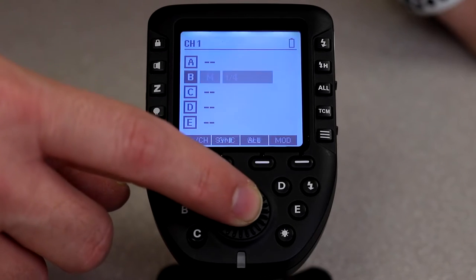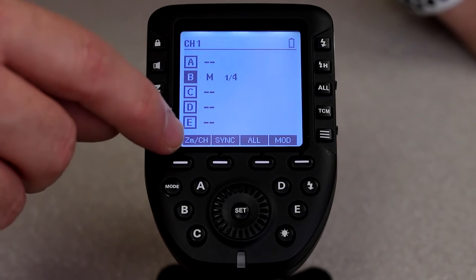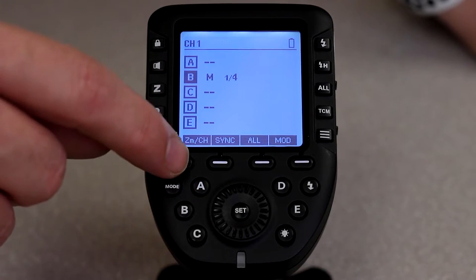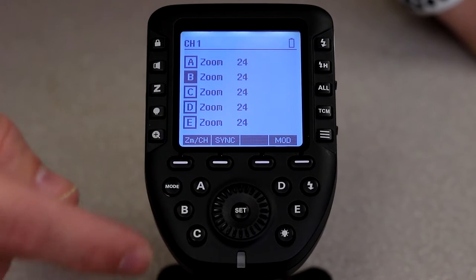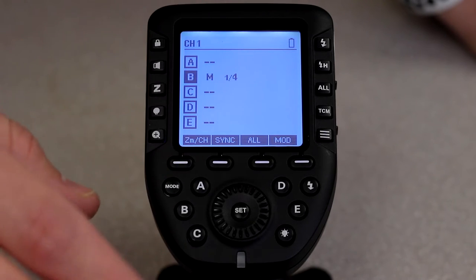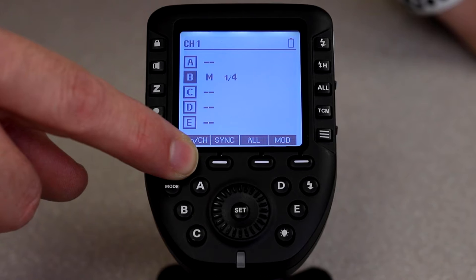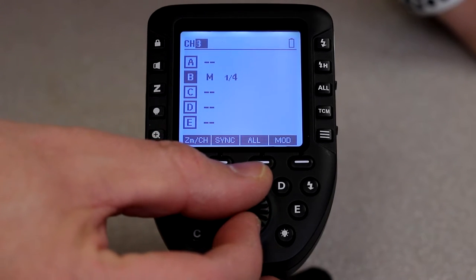So now I come up here to channel 1, what I want to do is change it. Down here in the corner you can see it says zoom slash channel. If I just hit that button once, it just goes to this zoom setting, we don't need to worry about that. Instead, I push and hold and that changes the channel.